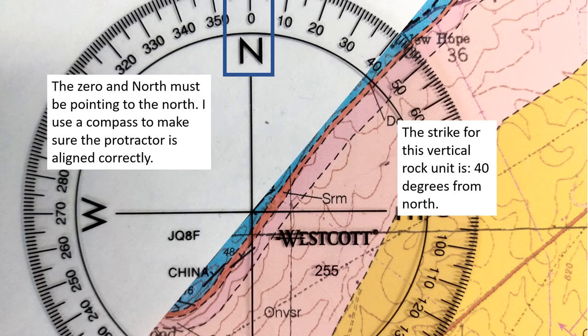If it is not properly aligned, your readings will not be correct. Reading where the side of the note card crosses the degrees, we can see that this strike line is 40 degrees from north. This can also be written as north 40 east, or northeast 40.